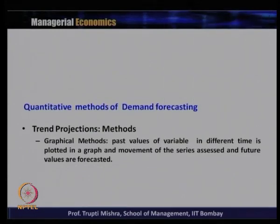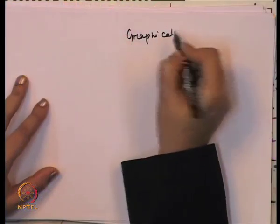In the graphical method, we identify the two variables to forecast demand — for example, time and quantity — and plot them in a graph. We will see the series, plot a line, and after looking at the series, we can forecast: if this was the trend in the last five years, what will be the forecasted demand for this product in the next five years? Looking at the past trend using the graphical method, we can generally forecast the future trend.